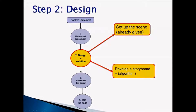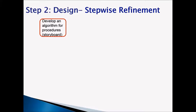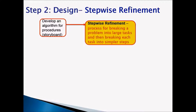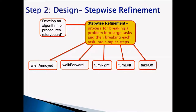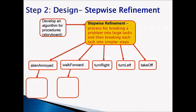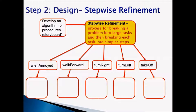Step 2: Design. When we talk about designing a solution we set up the scene — the scene is already given to you, so you don't have to create it. The second step is to develop a storyboard, meaning write an algorithm. Stepwise refinement is a process for breaking a problem into larger tasks and then breaking each task into simpler steps. The five larger tasks are: alien annoyed, walk forward, turn right, turn left, and take off. For each task you must break it down further into simpler steps.